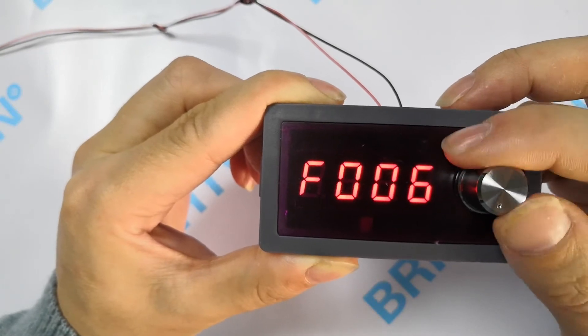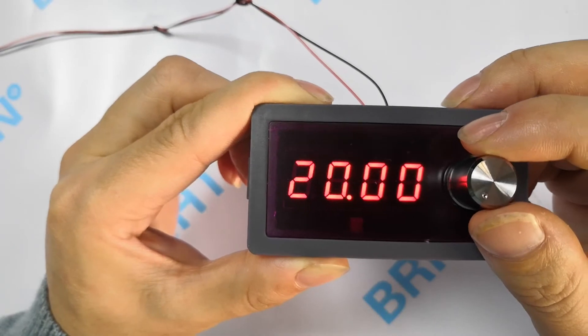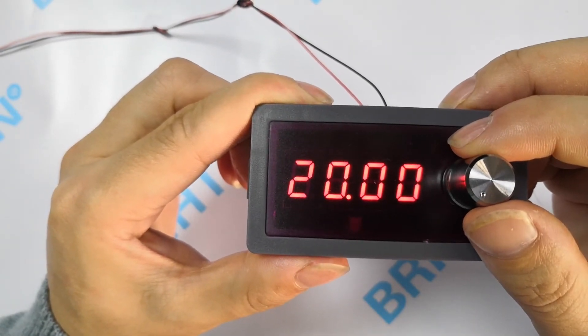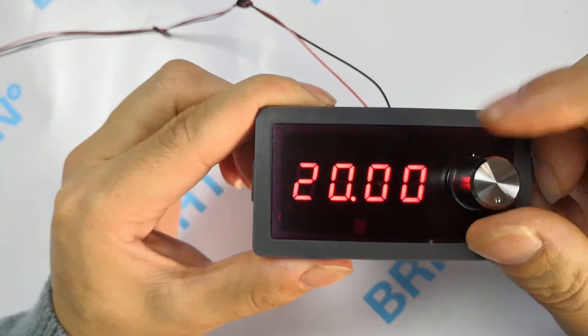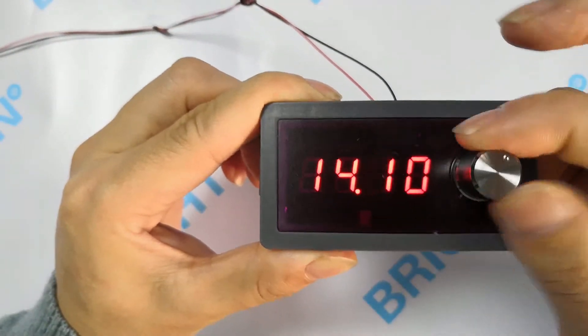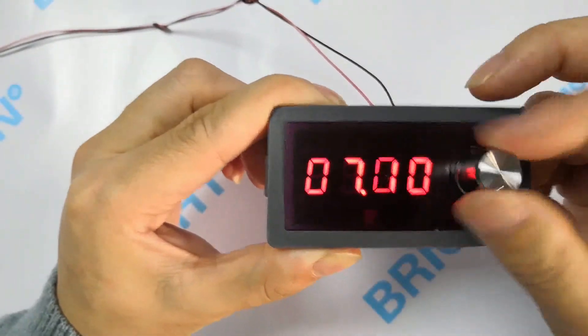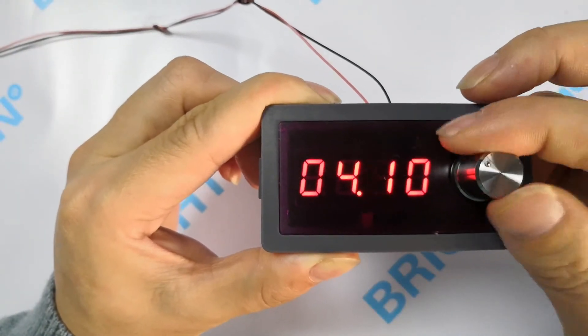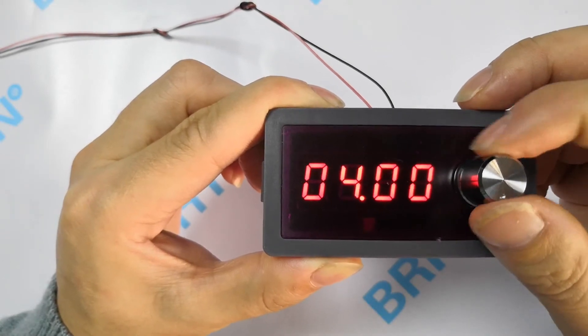Clockwise rotation till it displays F001, press down. Now let's check if it changed into 4-20 mAh output successfully. Maximum output. Minimum output, let's check: minimum output 4 mAh. We have changed its output range successfully.